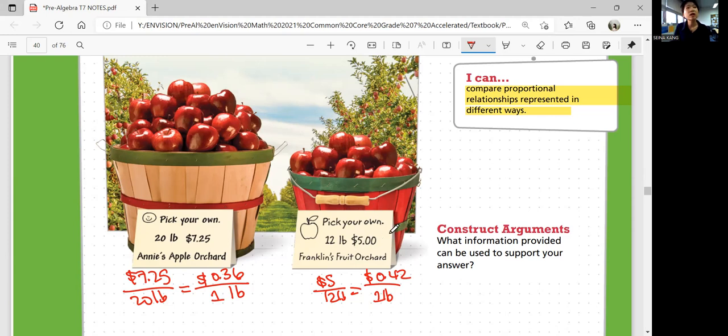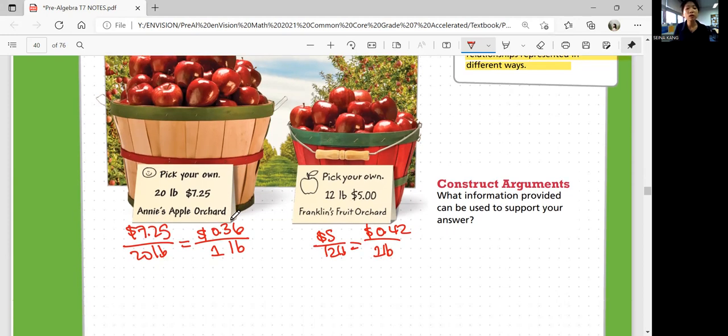It seems like you're paying less just because that's $5 and that's $7.25, but Annie gives you a lot more apples with the same money actually. So the better choice would be